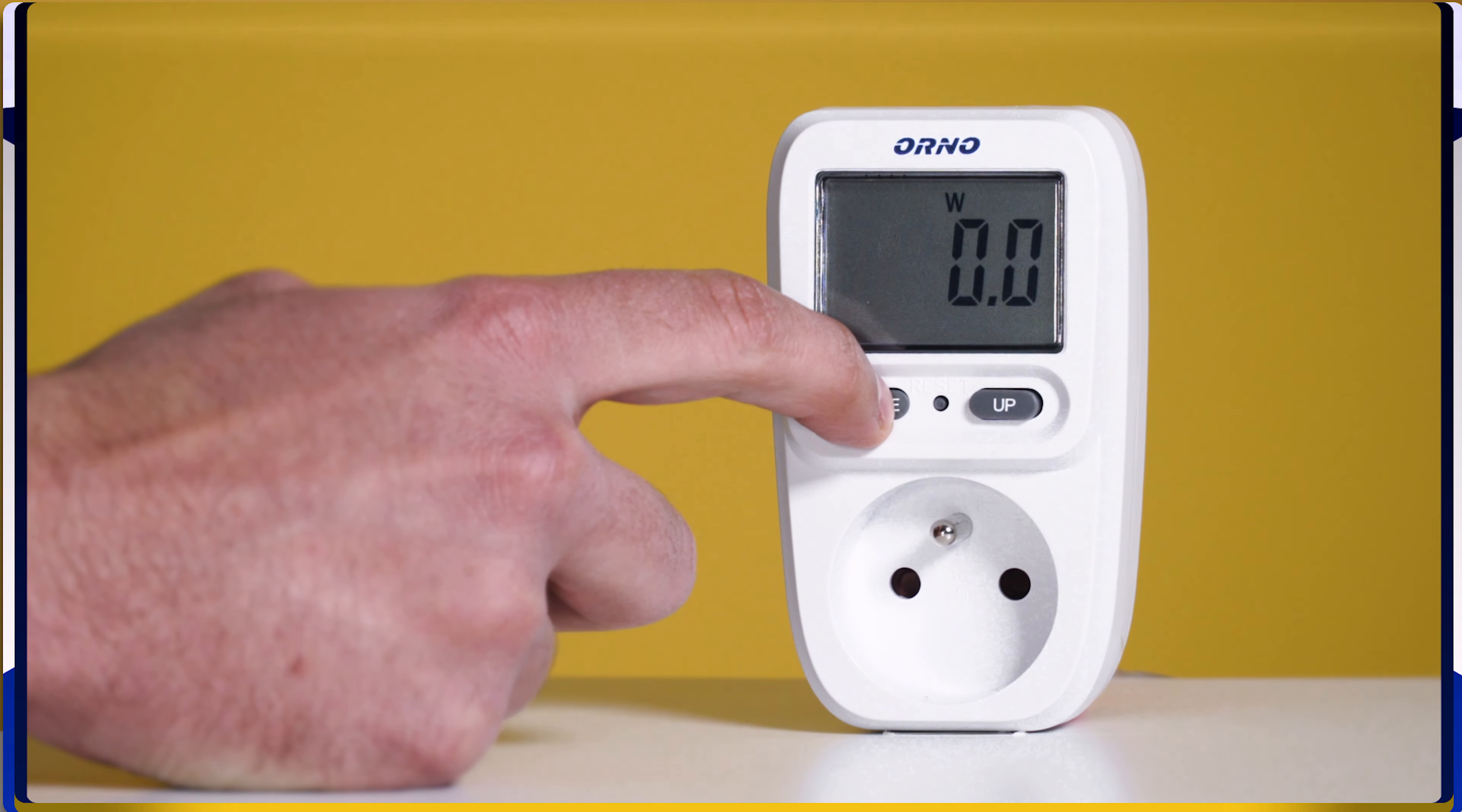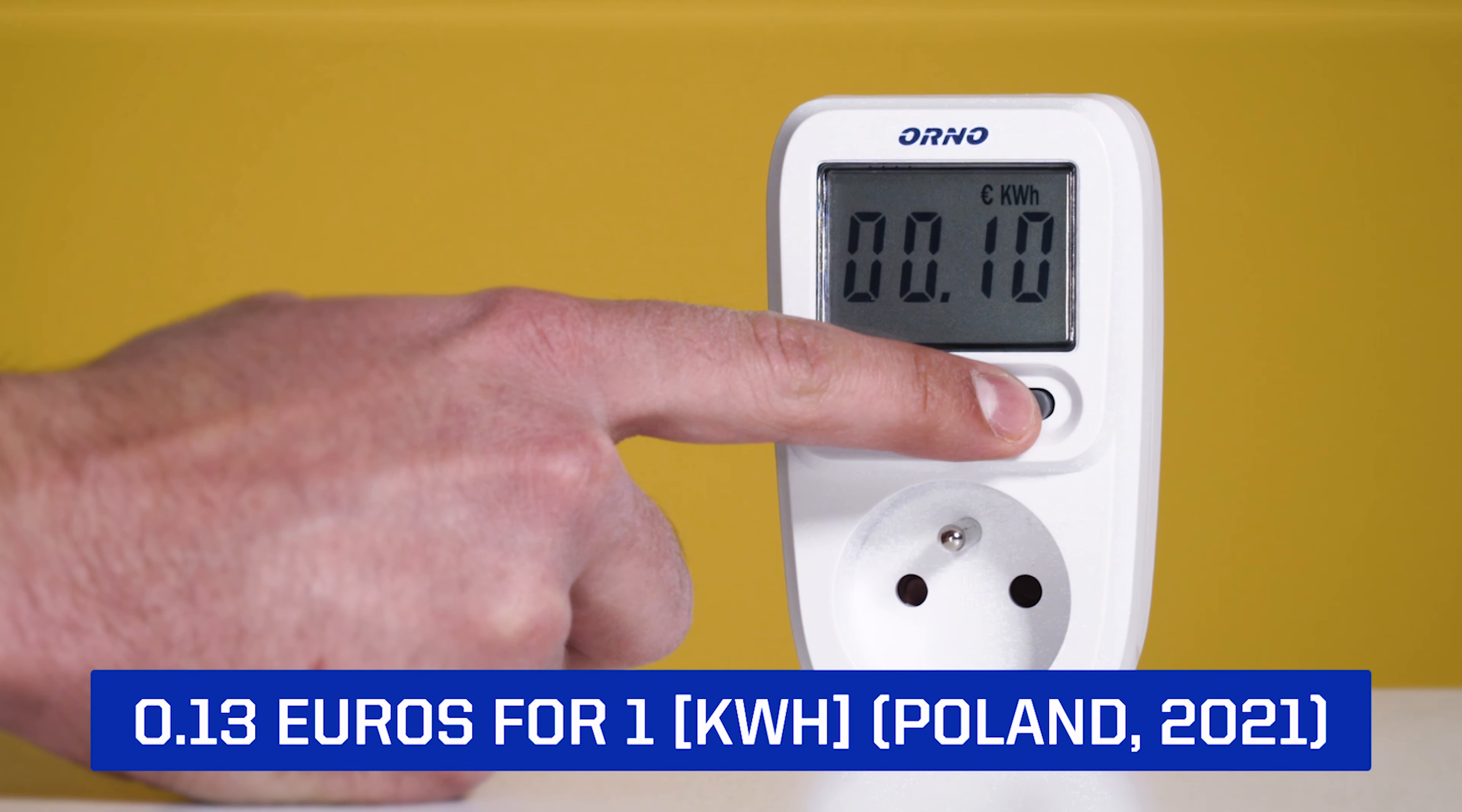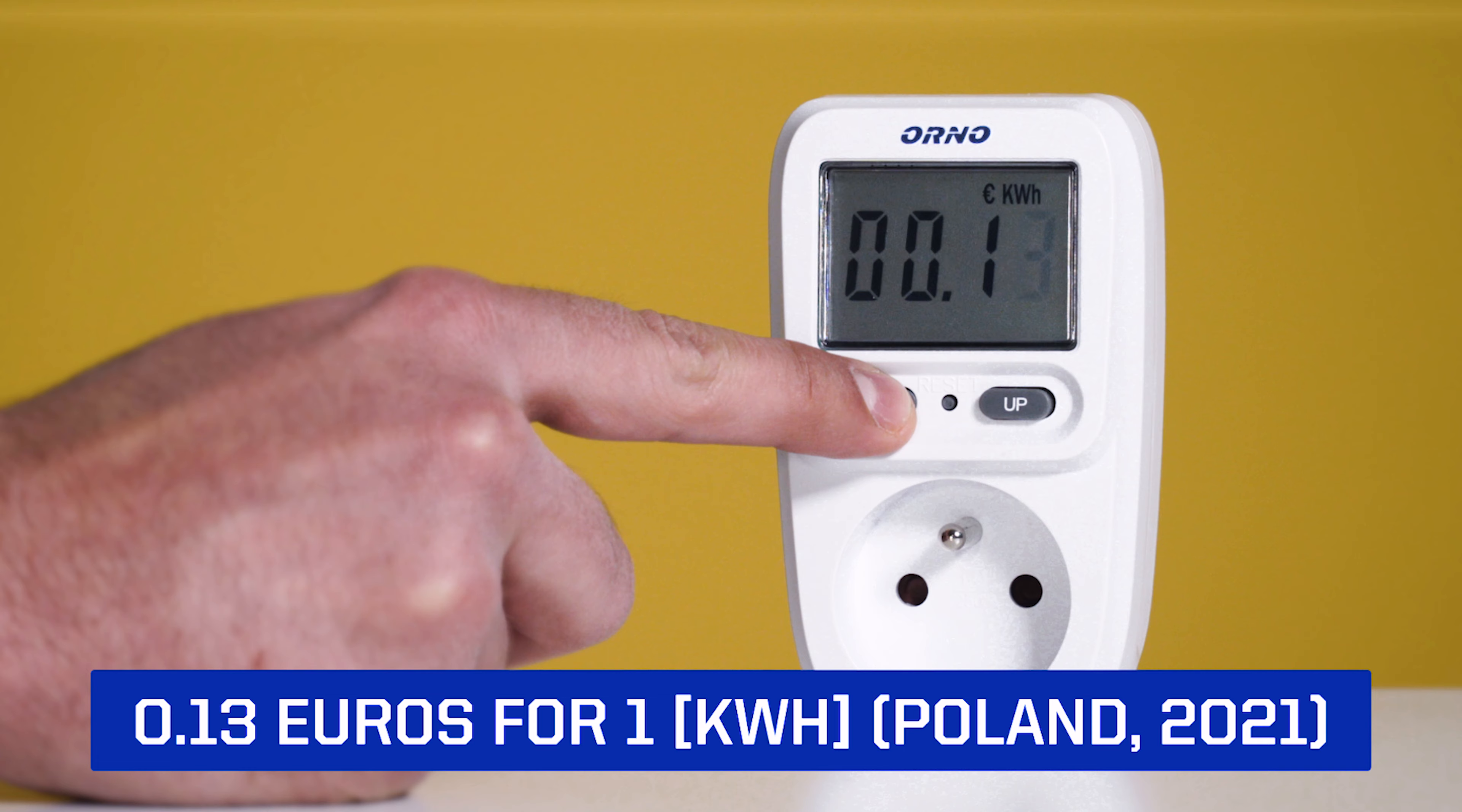To set the price, you first go and check how much your supplier charges you per kilowatt-hour. Here in Poland, we set it to 0.13 euros as an average price for 2021. To do so, hold the mode button for about three seconds. Then use the up button to set the digits from 0 to 9. And once again, mode button to change the position.